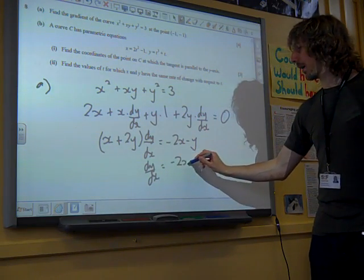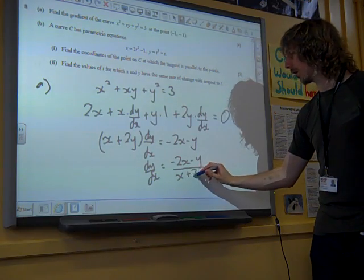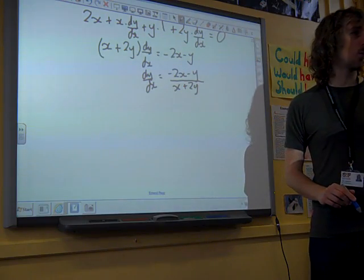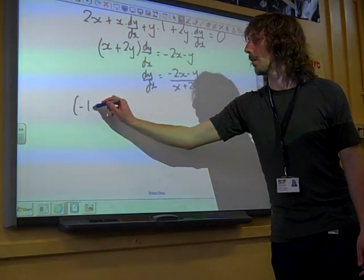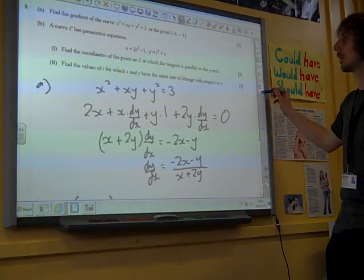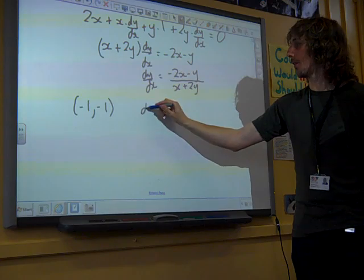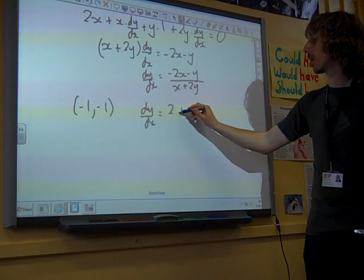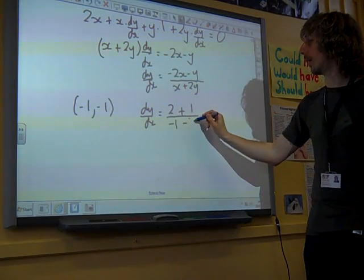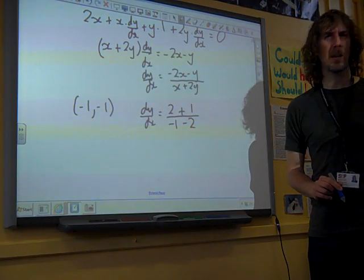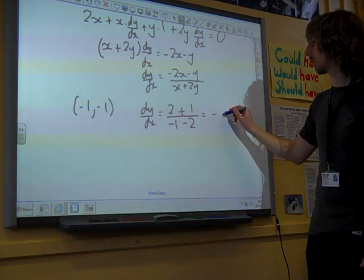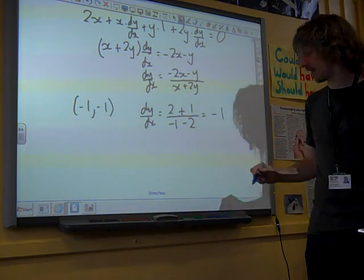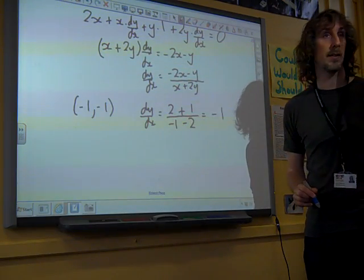So dy/dx is minus 2x minus y over x plus 2y. The question wanted us to know what was happening at the point minus 1, minus 1. So at the point minus 1, minus 1, dy/dx is 2 plus 1 over minus 1 minus 2, I think that's coming out as being minus 1. That's a pretty good four marks for doing that, isn't it?